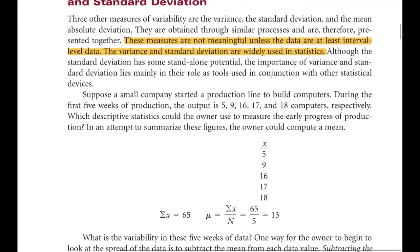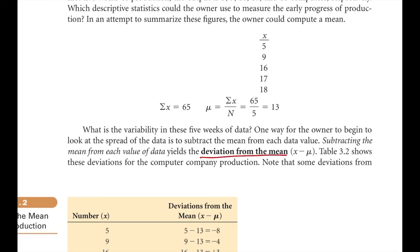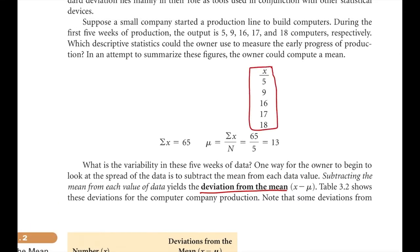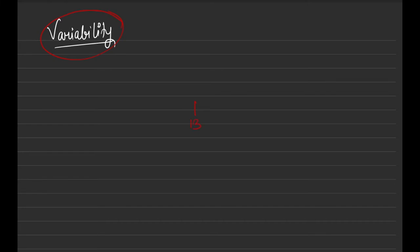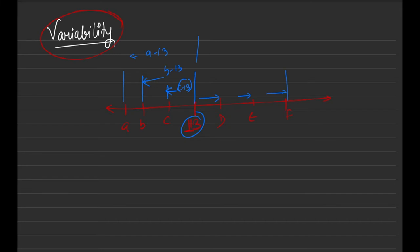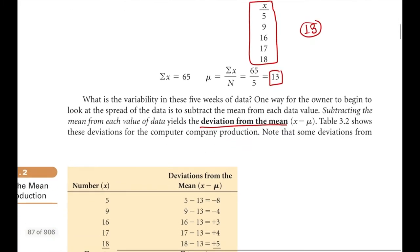The first thing we want to understand is deviation from the mean. Say you have five data points: 5, 9, 16, 17, and 18, and you want to calculate the deviation from the mean. First, calculate the mean, which is 13. Now each data point deviates from 13 — for example, point C deviates as C minus 13, B deviates as B minus 13, similarly D deviates as D minus 13, E as E minus 13, and so on.